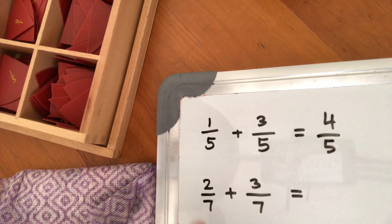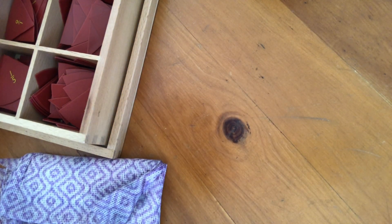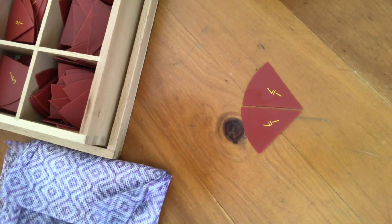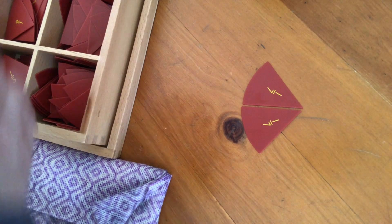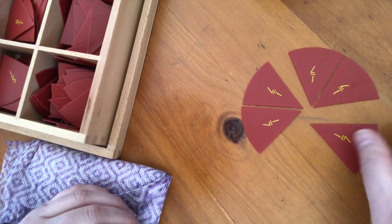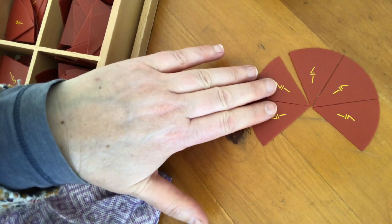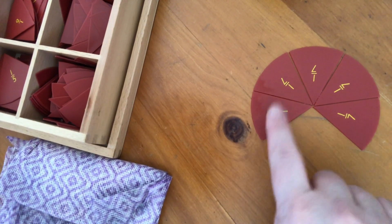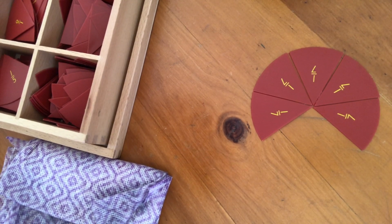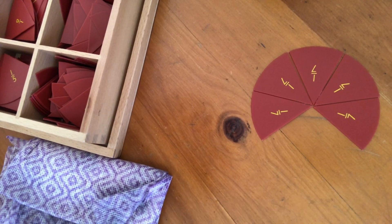Okay, next one I'm going to do is 2/7 plus 3/7. Again, I start with my 2/7 and I add another 3/7 to that. 3/7. Now I have 1, 2, 3, 4, 5/7. And I record that.